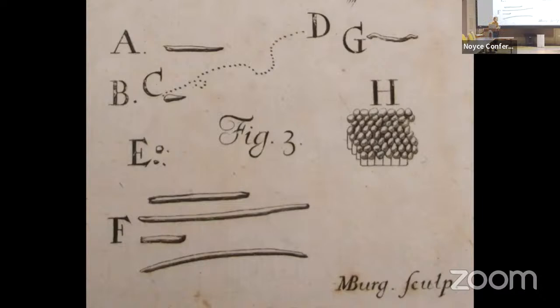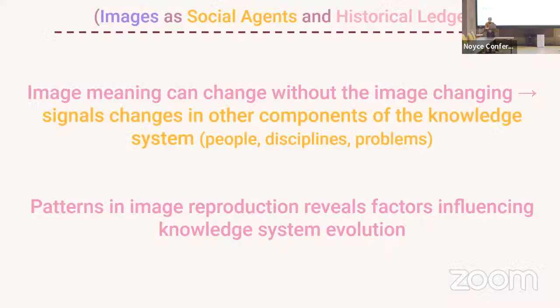Regarding modes of reproduction: if you went to the source and tried to crop out just the relevant section, digital cropping tools are squares, so H would be included. Many people don't have the tools, know-how, or time to remove H even if they knew it shouldn't be there. Then one person puts this image on their blog — it's out of copyright, so there are no legal or financial barriers to reproducing it erroneously. Image meaning can change without the image changing, signaling changes in other components of the knowledge system. Patterns of reproduction reveal factors influencing knowledge system evolution.